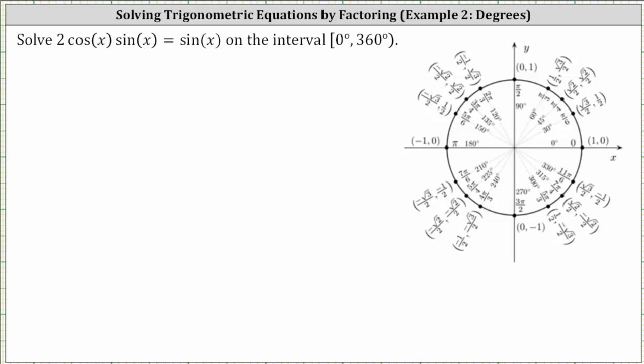We want to solve the trig equation two cosine x sine x equals sine x on the interval from zero degrees to 360 degrees, where the interval includes zero degrees and does not include 360 degrees.